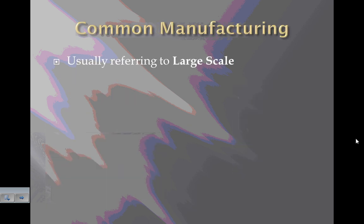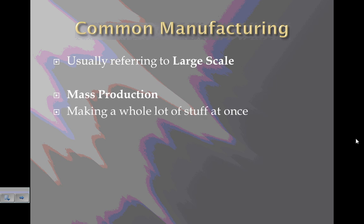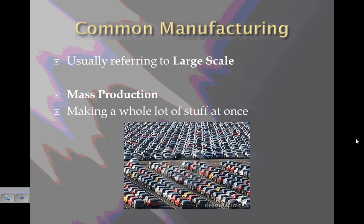Usually manufacturing refers to large scale, meaning mass production — making a whole lot of stuff at once, like making many, many cars, not just making one.